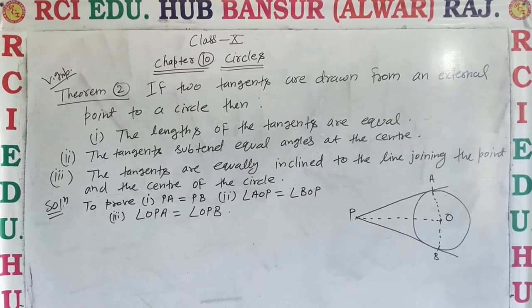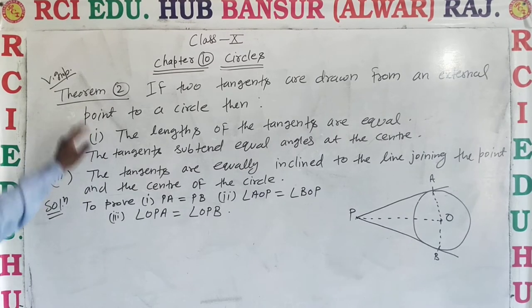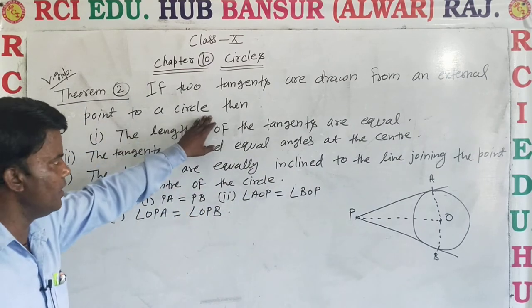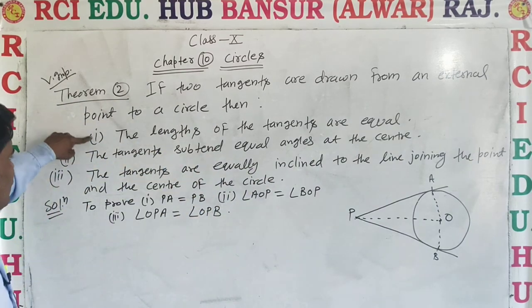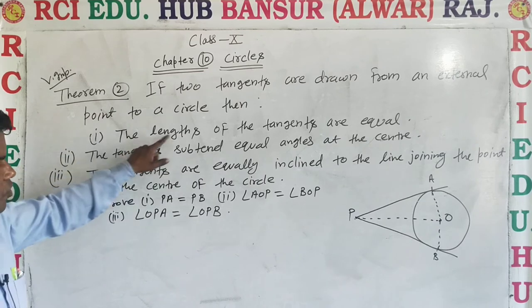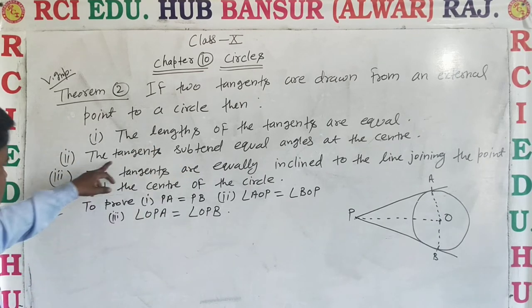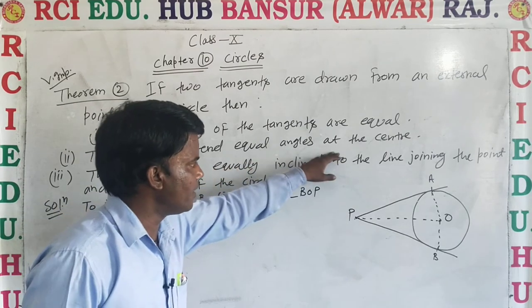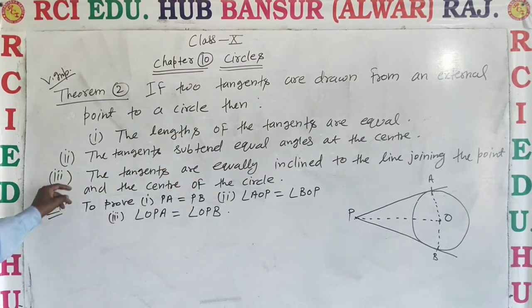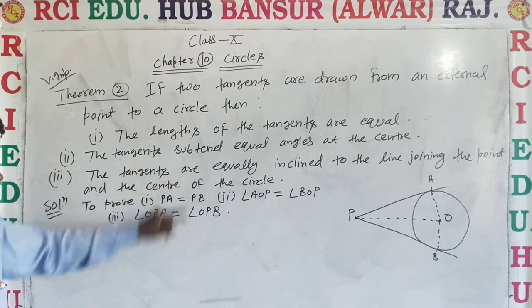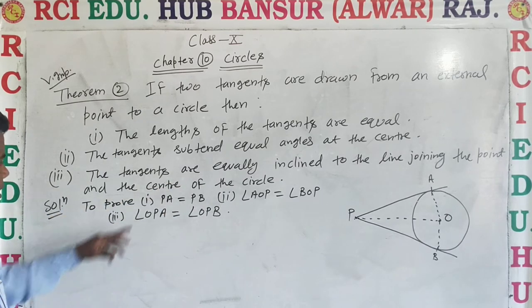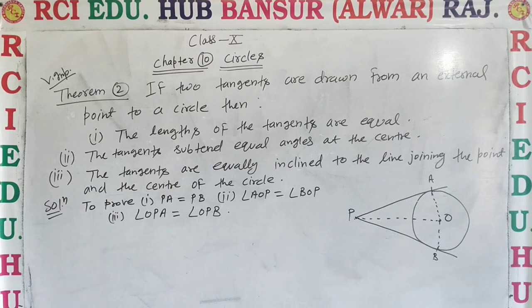After that, we are discussing Theorem 2. If two tangents are drawn from an external point to a circle, then: first, the lengths of the tangents are equal; second, the tangents subtend equal angles at the center; third, the tangents are equally inclined to the line joining the point and the center of the circle.